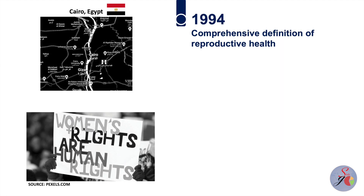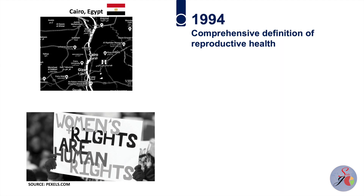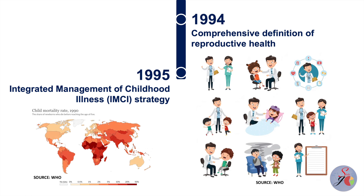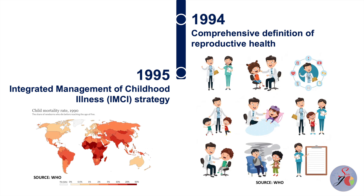At the International Conference on Population and Development held in Cairo, Egypt in 1994, countries agreed to the adoption of a comprehensive definition of reproductive health and recognition of reproductive rights, which was fully supported by WHO. The Integrated Management of Childhood Illness strategy was launched in 1995, promoting health and providing preventive and curative services for children under five in countries with high child mortality rates. Since then, child mortality has more than halved, dropping from 91 to 43 deaths per thousand live births between 1990 and 2050.